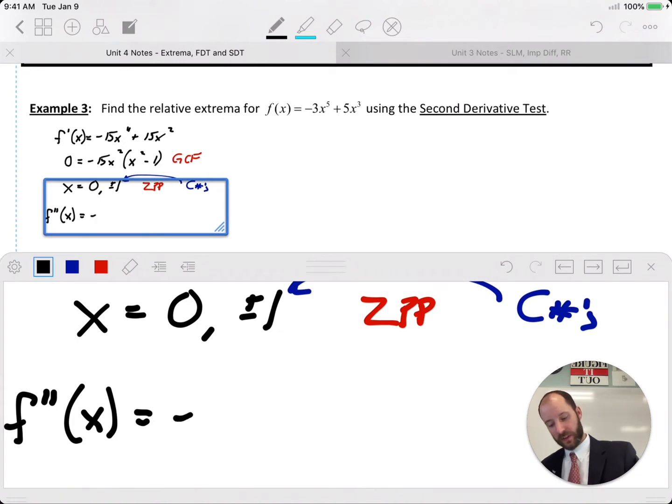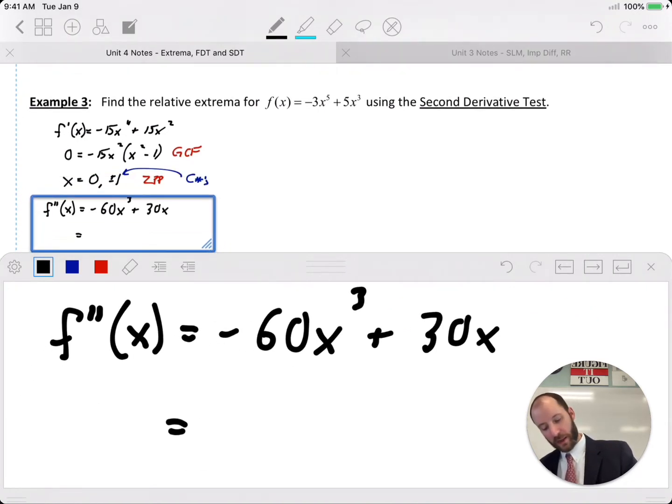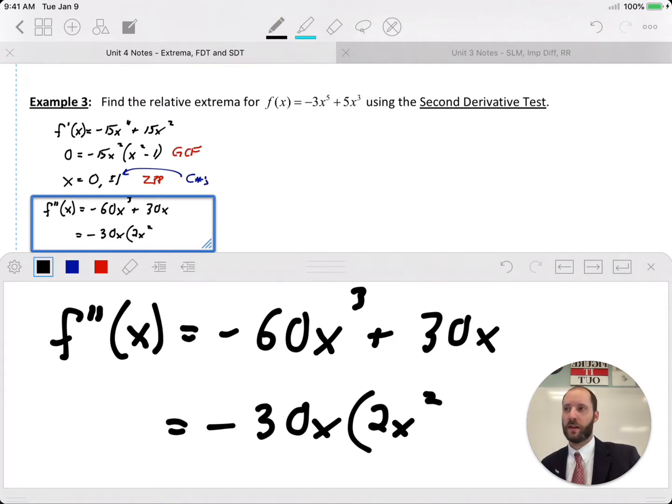So negative 60x cubed plus 30x. And then factor out negative 30x leaves me with, sorry, x squared. I meant to math this morning, not too good. Maybe it's because the kids did wake me up overnight. I'm too rested, not all harebrained and crazy.